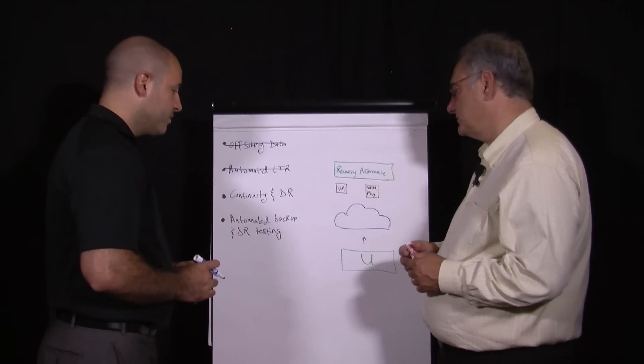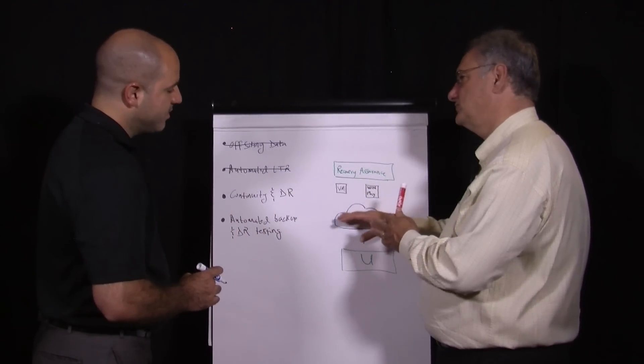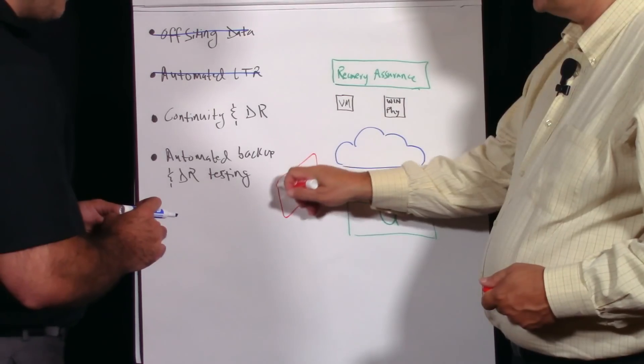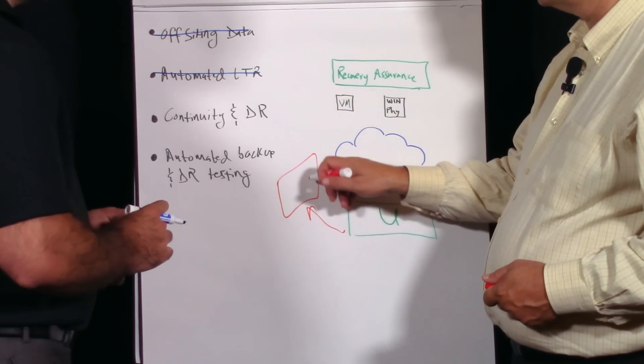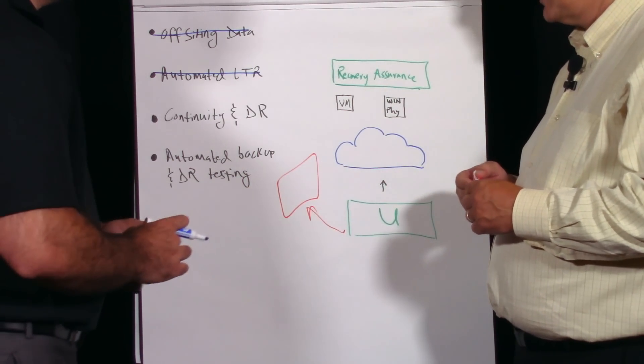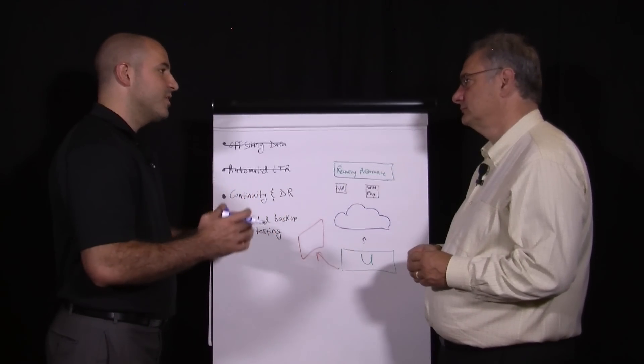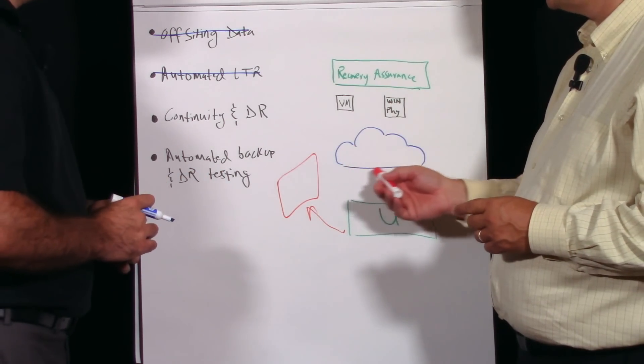What if I don't want to use your cloud? What if I want to do something else? Unitrends integrates with the likes of Amazon or Azure to take the data from on-premise, on appliance into third-party cloud providers like that. What if I've got my own data center? As long as you have an appliance on each end, it could be our physical appliance models or it could be the virtual appliance, the two can interact.